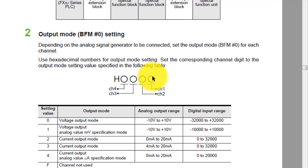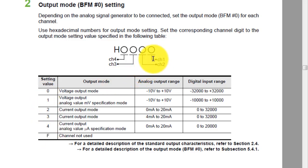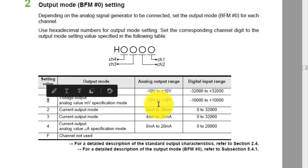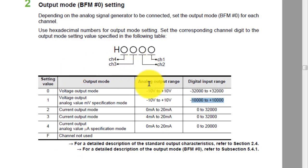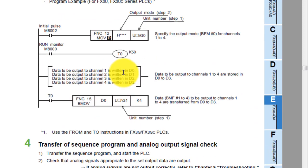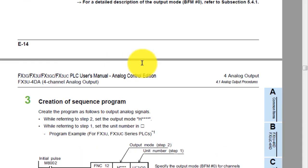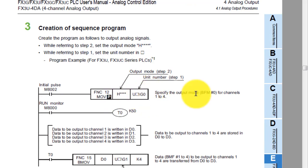These output mode settings are very important. You can see the hexadecimal values for each channel. If you put 0 in channel number 2, you will use voltage output minus 10V to plus 10V. If you use value mode 1, it will be the same range but the digital input value changes. If you put the value F in any channel, that channel will not be used. The MOV command is used to move your setting into buffer memory number 0.